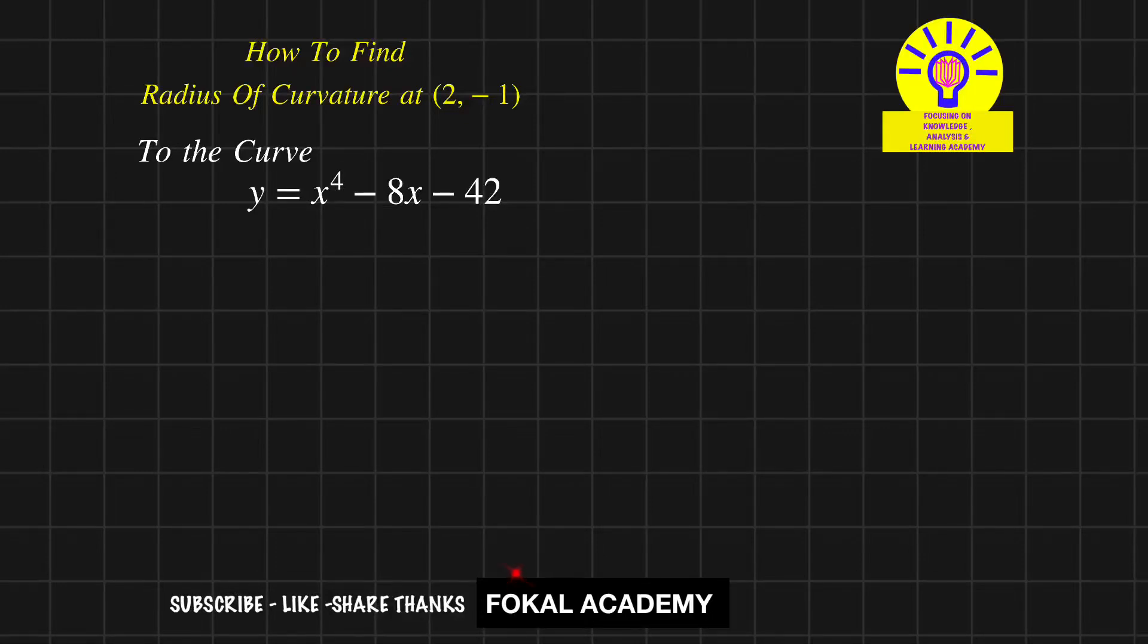Hi dear one, welcome to Focal Academy. Seeing this problem here, how to find radius of curvature at point (2, -1) to the curve y = x⁴ - 8x - 42.